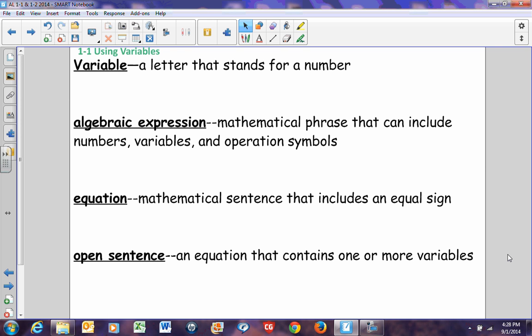A variable is exactly what it sounds like. It comes from the root word which means to vary, which means it can change. It's a letter that stands for a number. One day it can equal 2, the next day it can equal 7. It can and will change. Examples of variables are P, T, X, Z, etc.